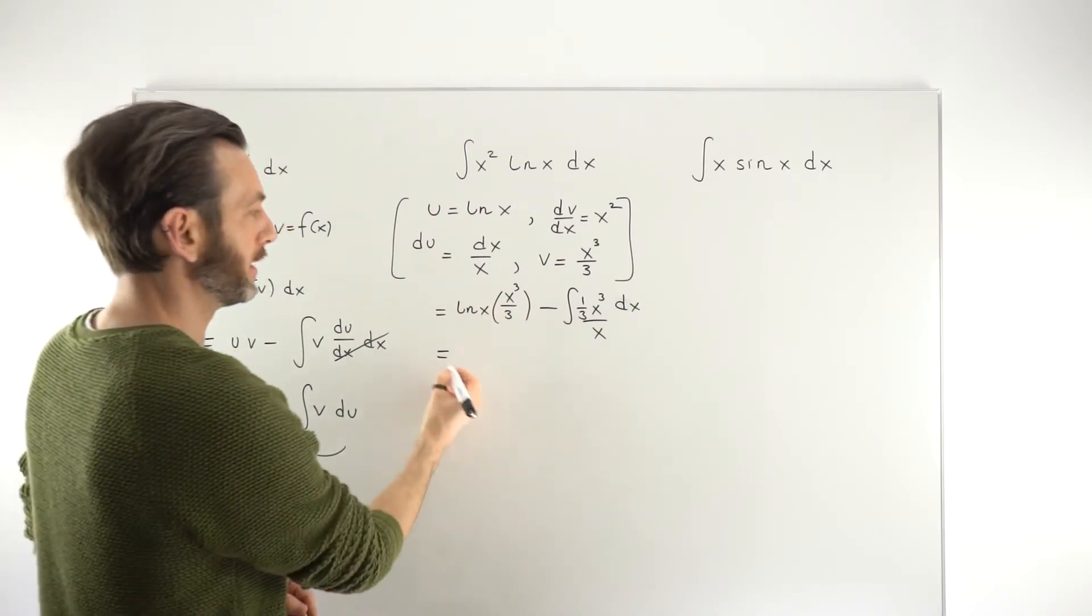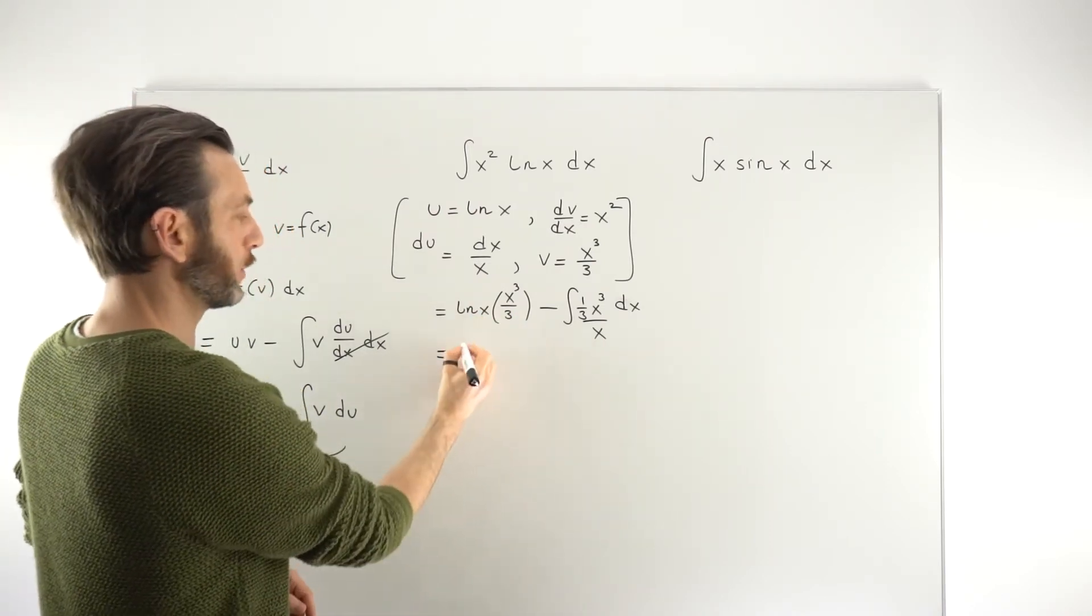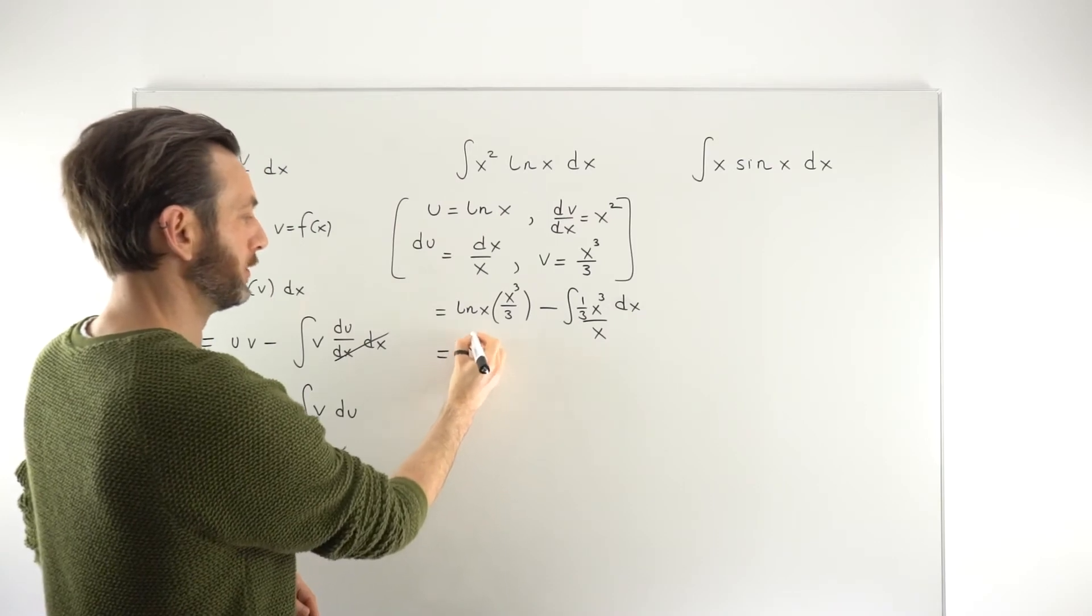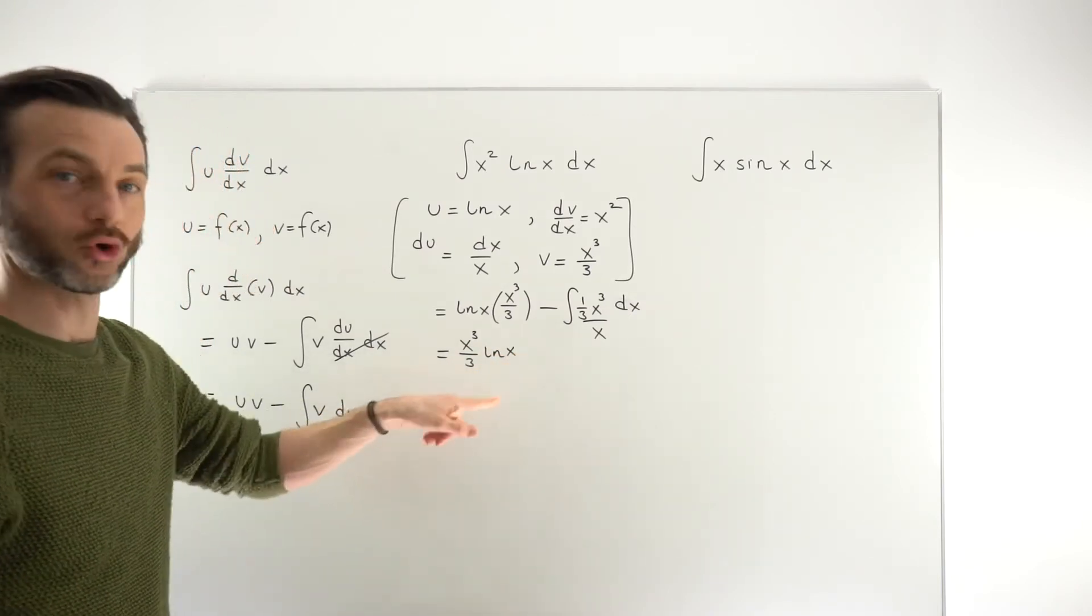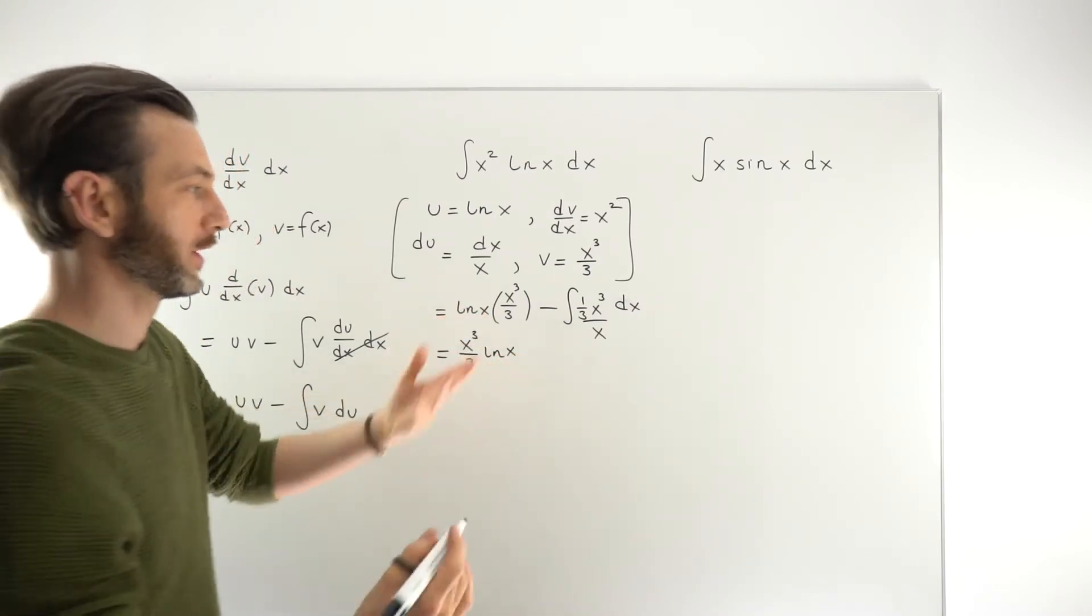So I'm not too worried about this. You could maybe tidy this up a little. I'm maybe going to write it as, I'm just going to switch the order and write it as x cubed over 3 ln x. I've not really done anything there. I just prefer this order. I think this is maybe a little more natural. That's fine.